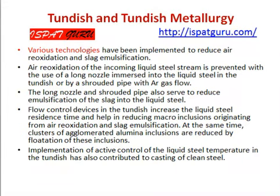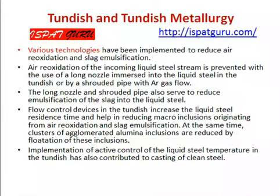Various technologies have been implemented to reduce air reoxidation and slag emulsification. Air reoxidation of the intermittent liquid steel stream is prevented with the use of a long nozzle immersed into the liquid steel in the tundish, or by a shrouded pipe with inert gas flow. The long nozzle and shrouded pipe also serve to reduce the emulsification of slag into the liquid steel. Flow control devices in the tundish increase the liquid steel residence time and help in reducing micro-inclusions originating from air reoxidation and slag emulsification. Simultaneously, clusters of alumina and mineral inclusions are reduced by flotation. Implementation of active control of steel temperature in the tundish has also contributed to steel cleanliness.